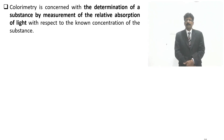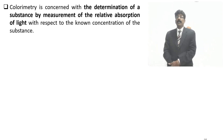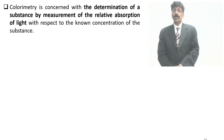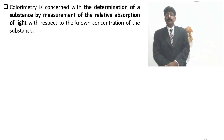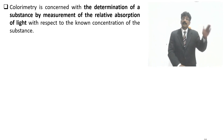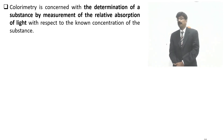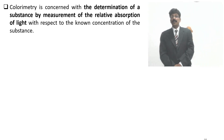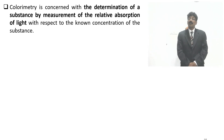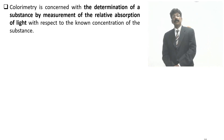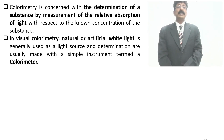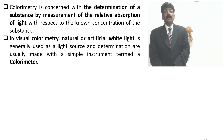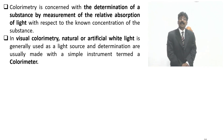If concentration is high, transmitted light decreases; if concentration is low, transmitted light increases. This is the Beer-Lambert law, expressed as epsilon equals absorbance versus concentration — the formula you may have studied. The visual colorimeter uses natural or artificial white light. The light source for visible light is a tungsten filament, generally used as a light source.